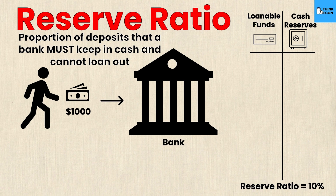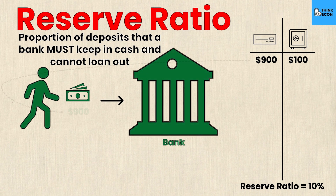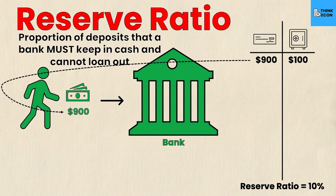In this example we'll say the reserve ratio is 10%, which is actually the rate in the U.S. So with a $1,000 deposit, 10% — or $100 — must go to cash reserves, and the other 90%, or $900, can be loaned out. The bank, being a business, will loan that money out, and eventually a new individual will come along and deposit that $900 — which originated from the original $1,000.